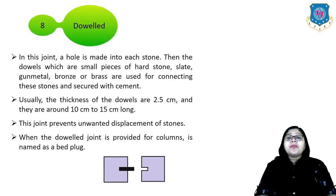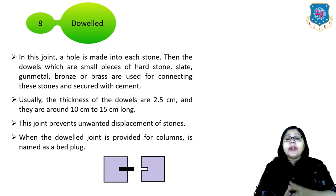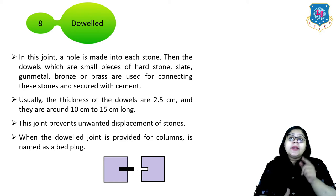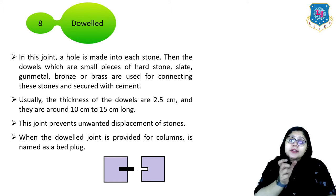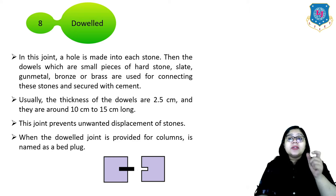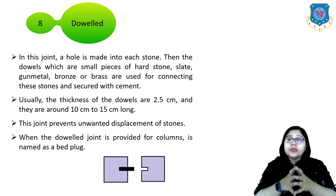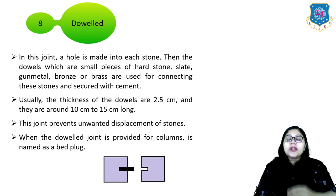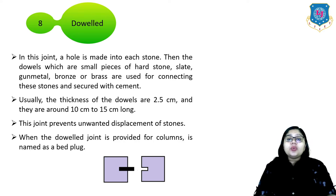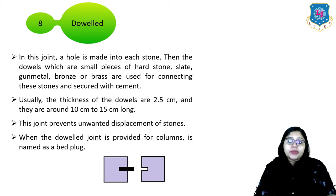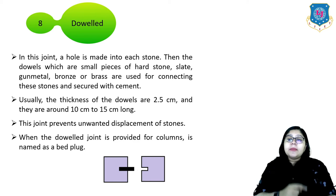The eighth type is the dowel joint. In this joint, a hole is made in each stone and then dowels — which are small pieces of hard stone, slate, or gun metal, bronze or brass — are used for connecting those stones, secured with cement. The thickness of dowels is usually 2.5 cm and they are 10 to 15 cm long. This joint prevents unwanted displacement of stones. When a dowel joint is provided for a column, it is named the bed plug.